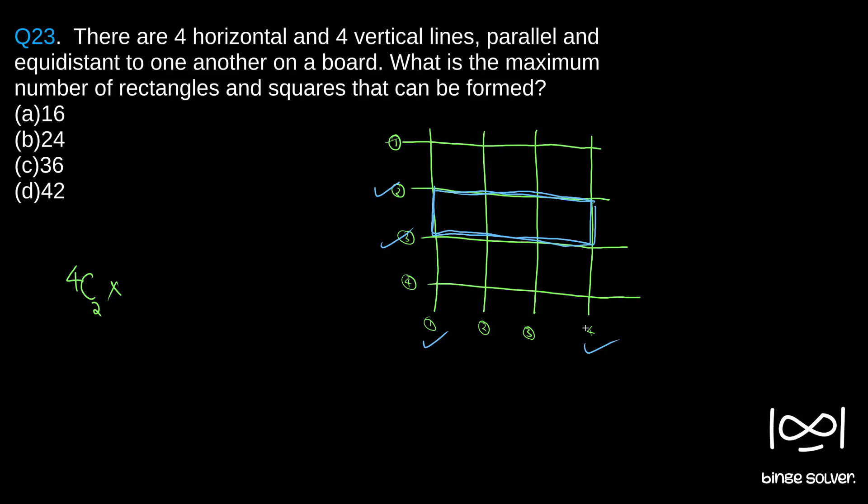4C2 is four times three divided by two times one, which is six. Similarly, 4C2 is six. So six times six equals 36.